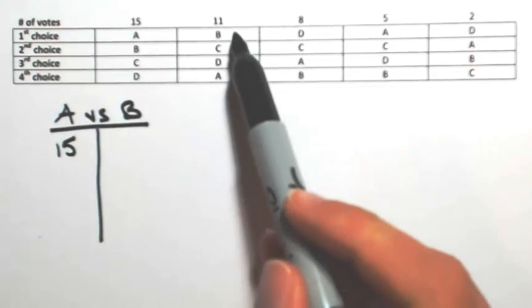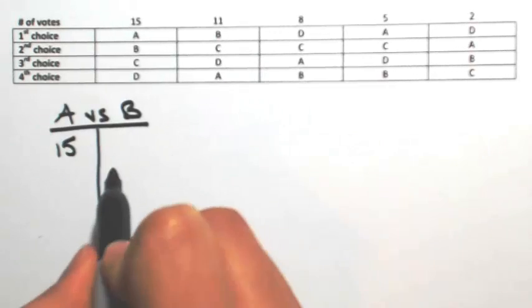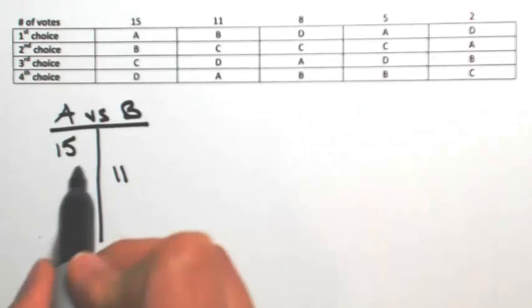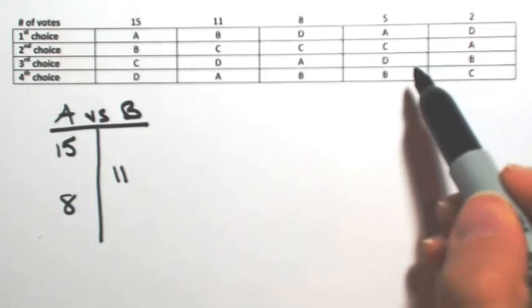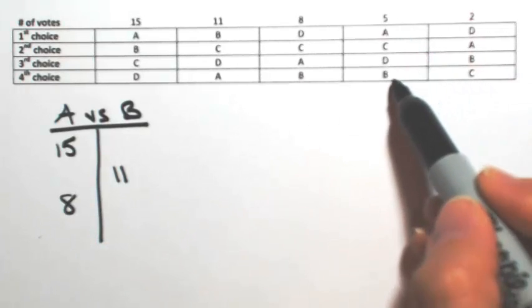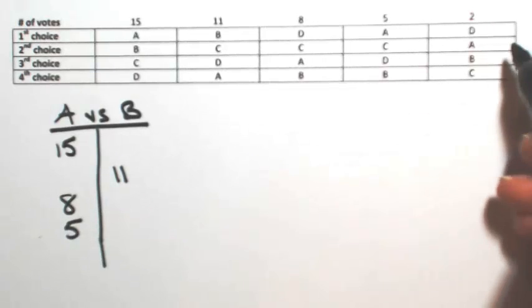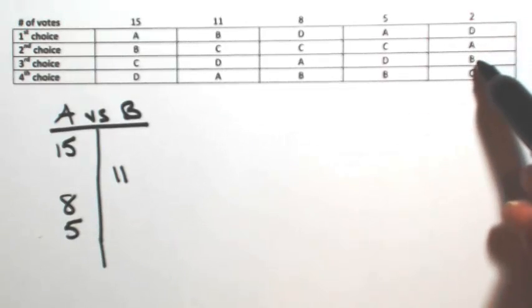In the second set, B is over A, so B gets 11. In the third set, A is over B, so A gets the 8. In the fourth one, A again is over B, so A gets 5. And in the last one, A is over B, so A gets 2.